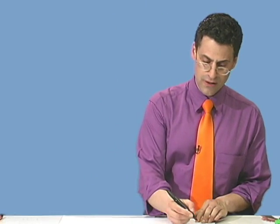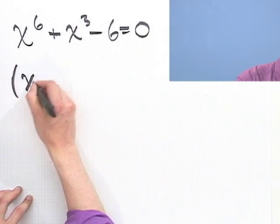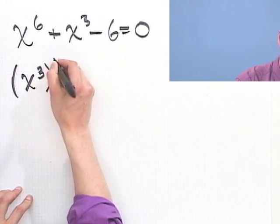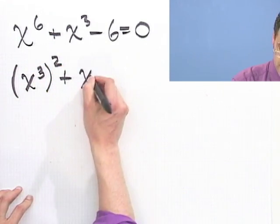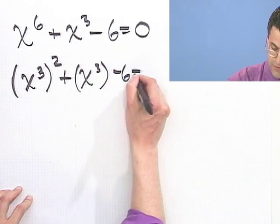OK, let's see how I would do. I would notice that this is actually x cubed squared plus x cubed minus 6 equals 0.